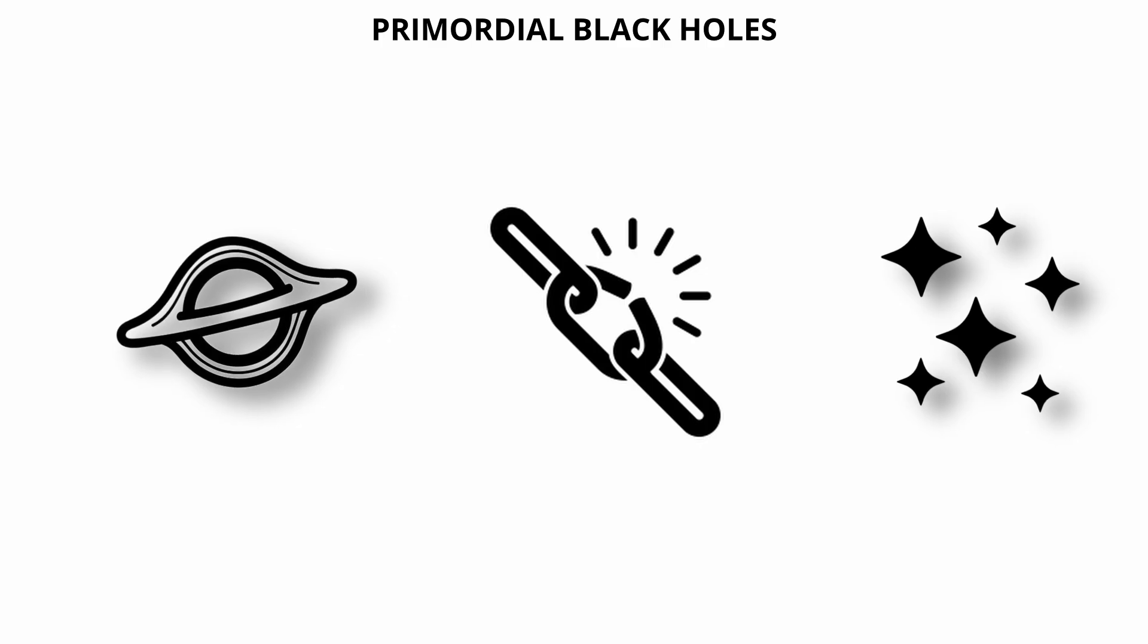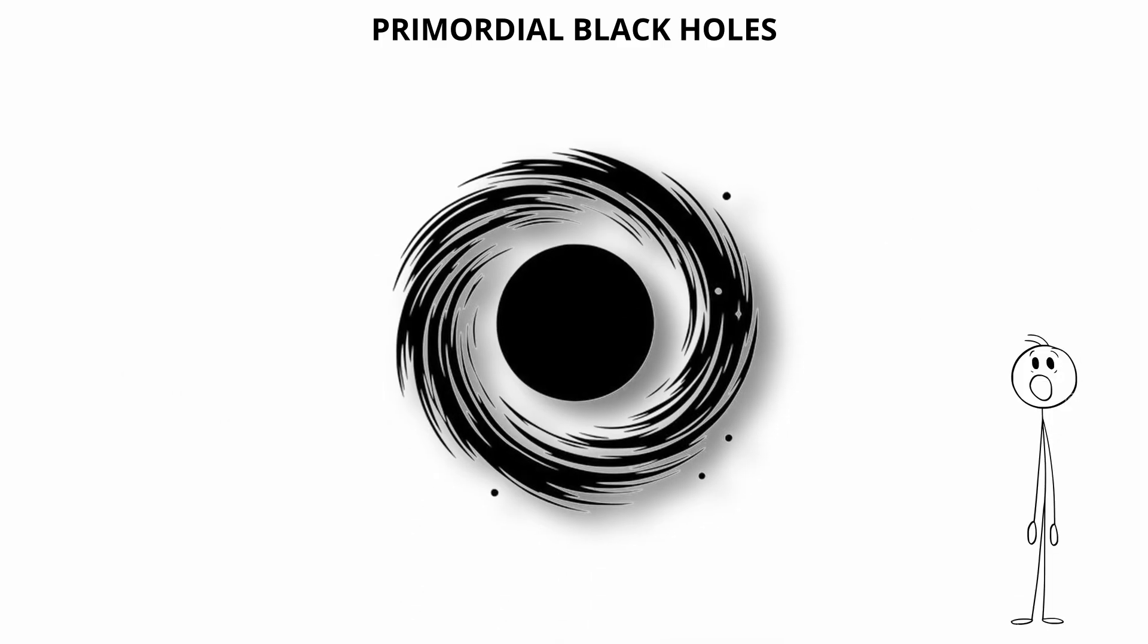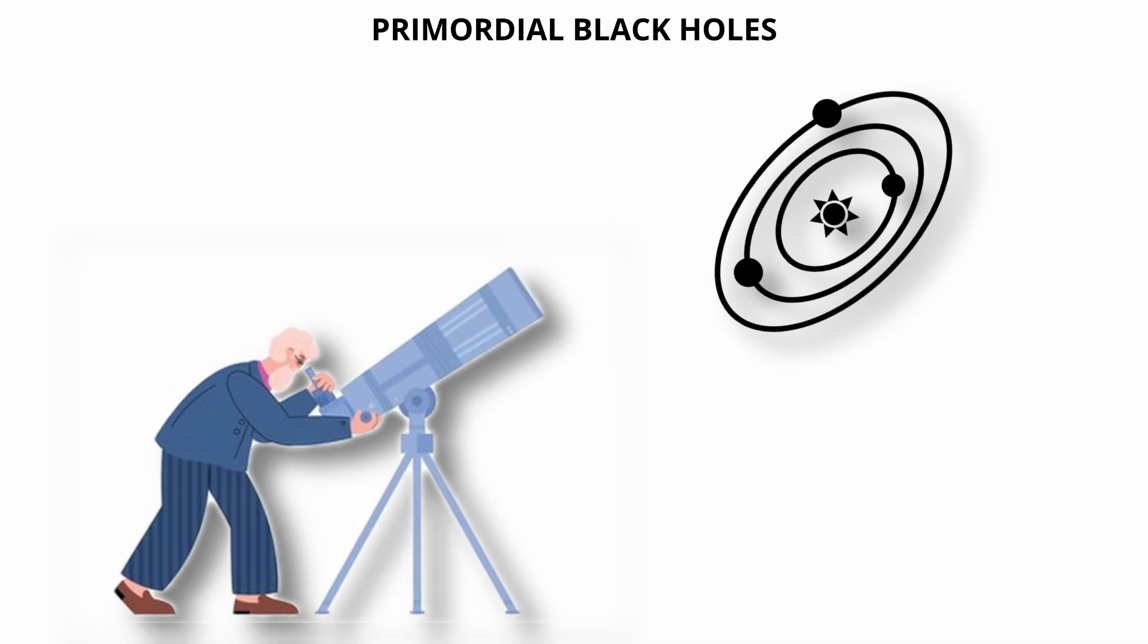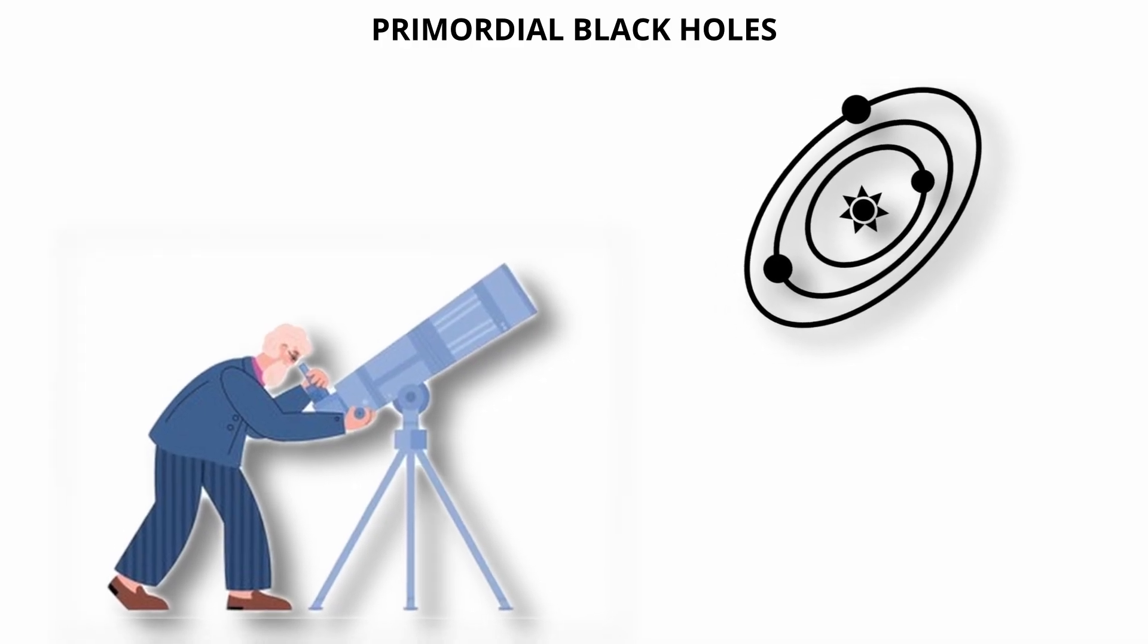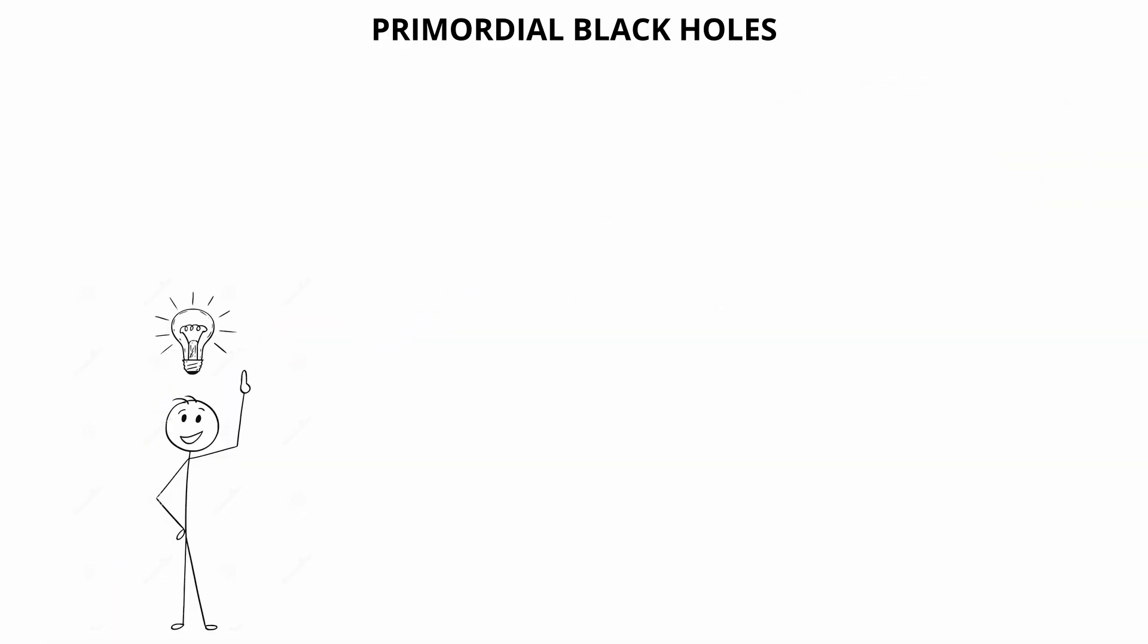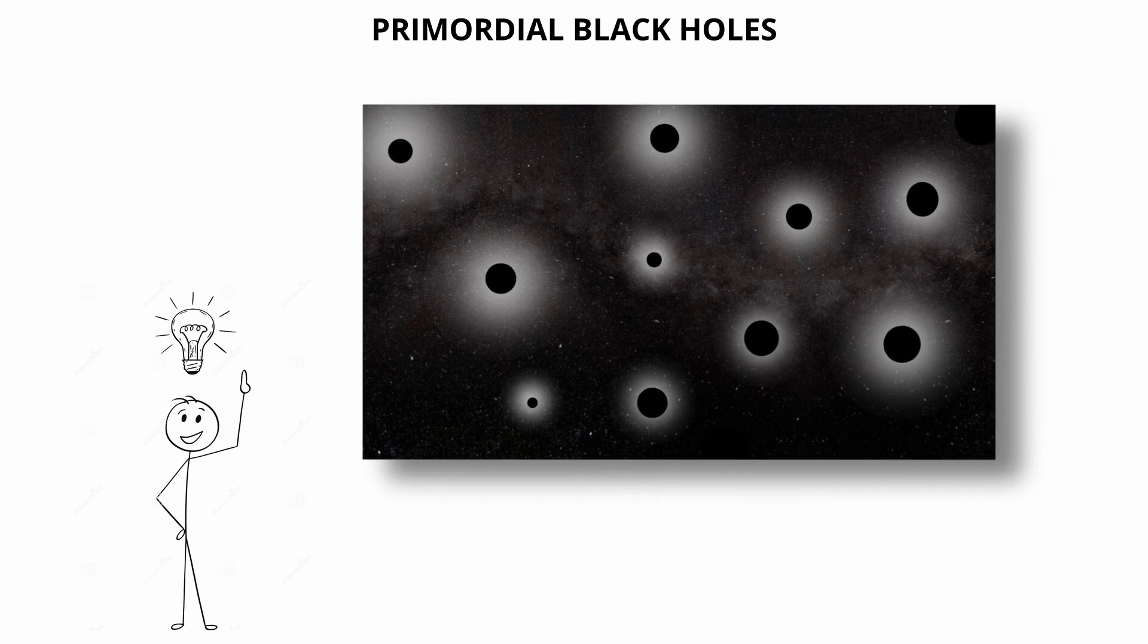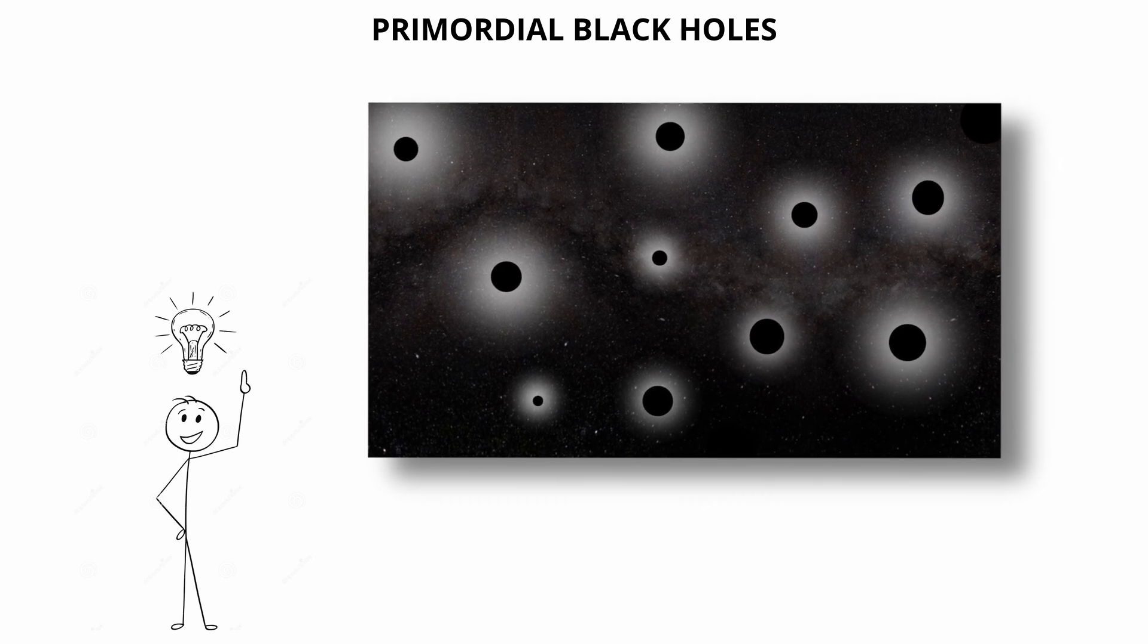Because they are not tied to stellar remnants, primordial black holes could exist in environments where no stars had yet formed. This makes them a candidate for explaining certain cosmological mysteries, including the composition of dark matter. Some models propose that a population of undetectable small primordial black holes could contribute significantly to the universe's total mass.